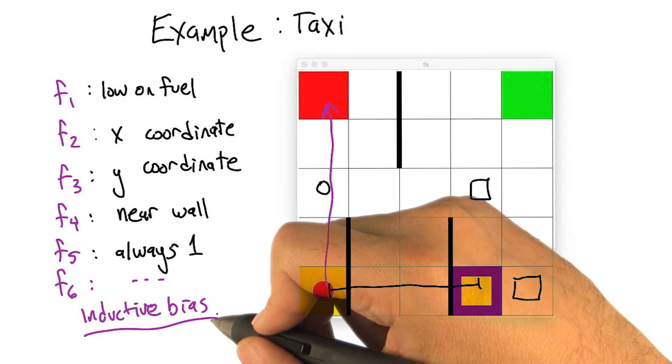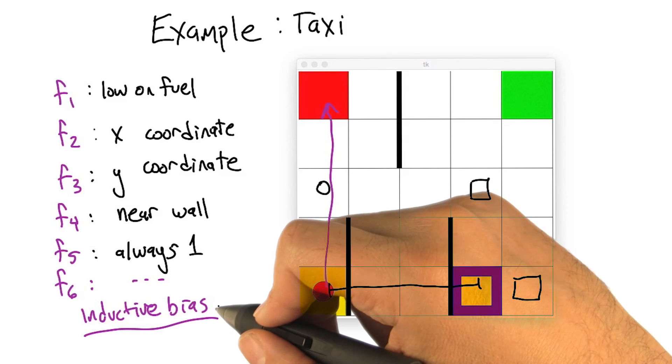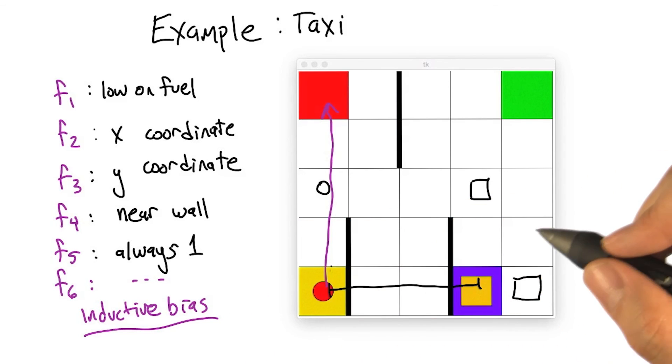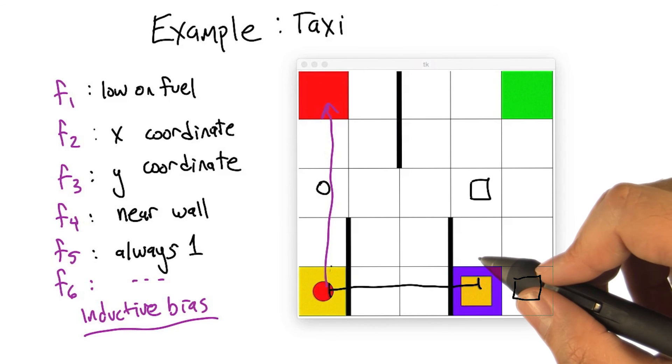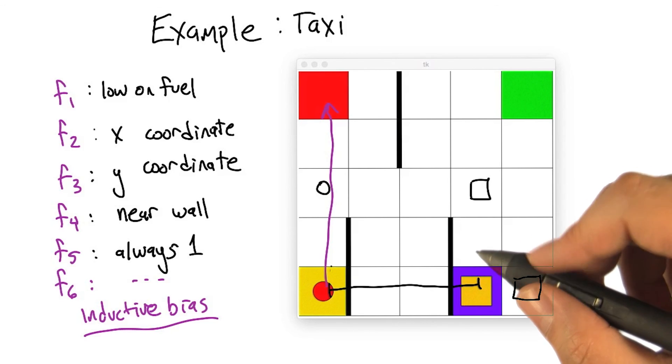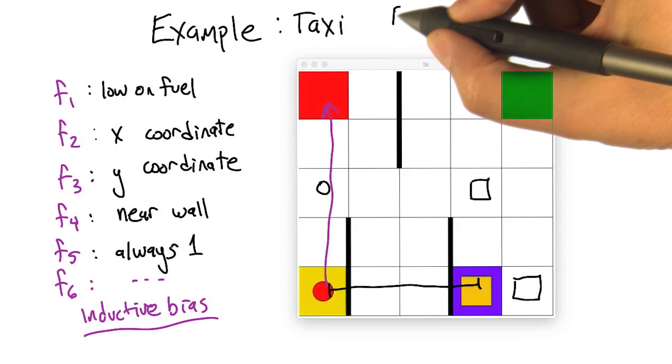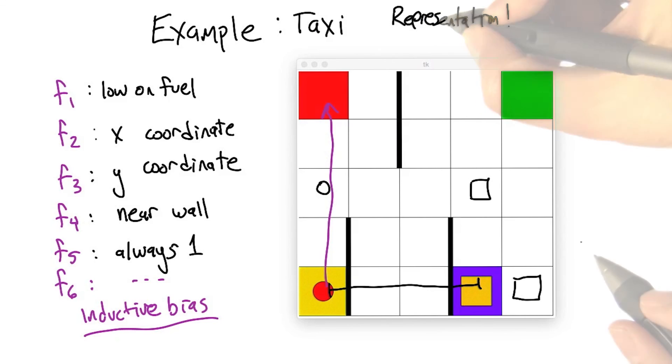Okay, do we have a name for that, or is inductive bias an okay stand in? It's a representation, right? It's a representation issue. Some representations are better for some things than others, and you can learn differently depending upon what features you choose. Okay.